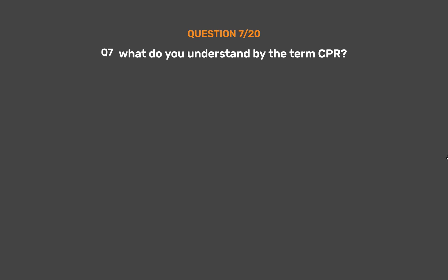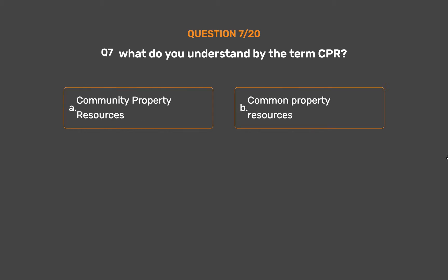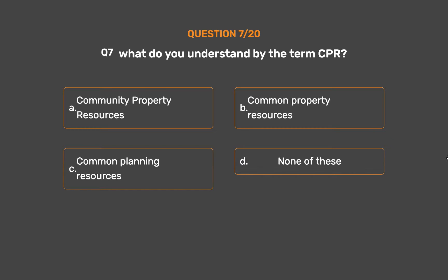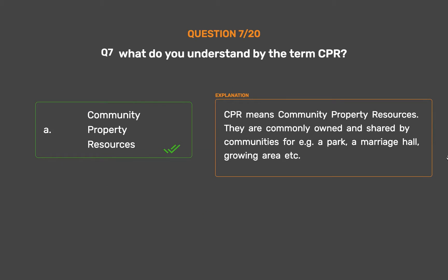Question No. 7. What do you understand by the term CPR? Option A: Community property resources. Option B: Common property resources. Option C: Common planning resources. Option D: None of these. The correct answer is Option A: Community property resources. CPR means community property resources.